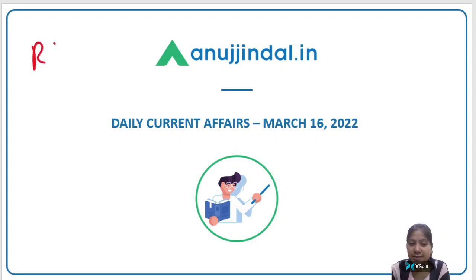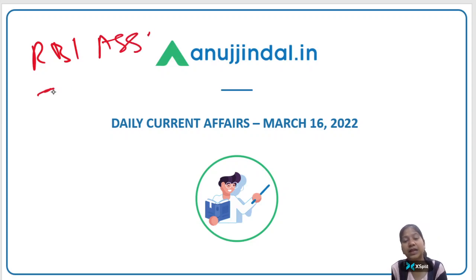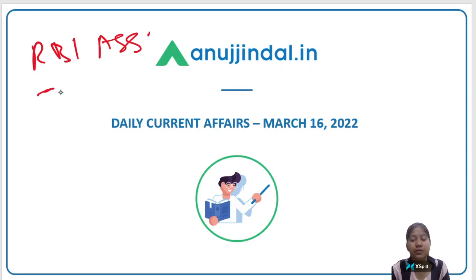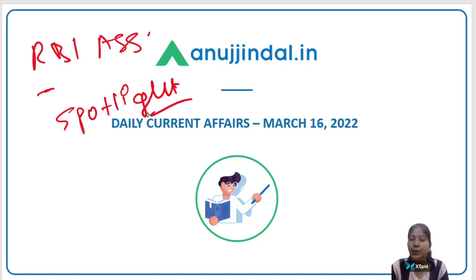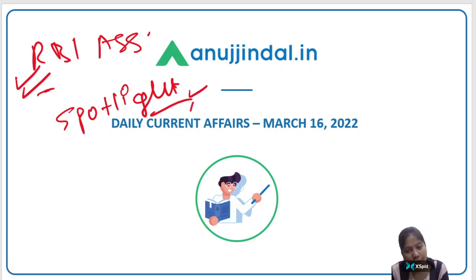In your RBI Assistant examination, there are 40 questions and the level of these questions is similar to the level asked in Phase 1 of RBI Grade B. The source you have to follow is the Spotlight or the daily current affairs video series for Phase 1.